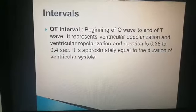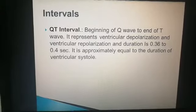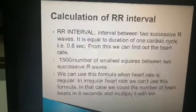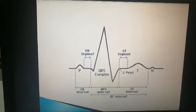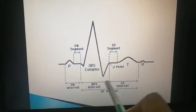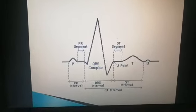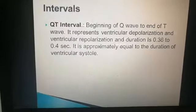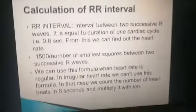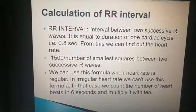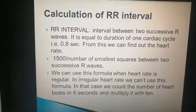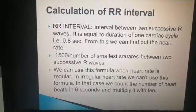The QT interval spans from the beginning of the Q wave to the end of the T wave, and its duration is 0.36 to 0.4 seconds. The R-R interval is the interval between two successive R waves, which equals the duration of one cardiac cycle — approximately 0.8 seconds — and from this we can calculate the heart rate.